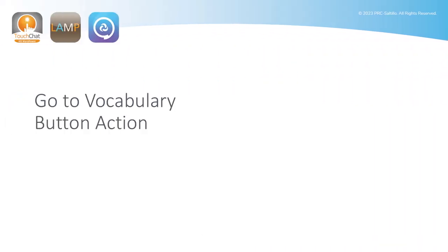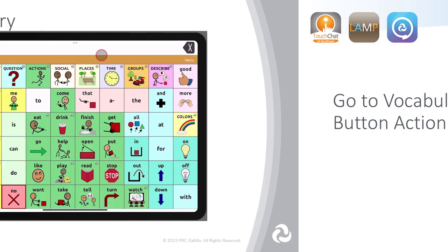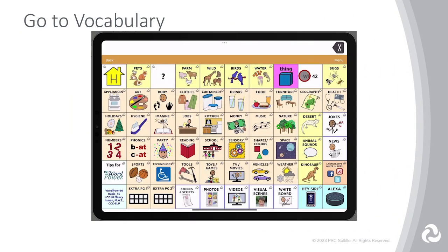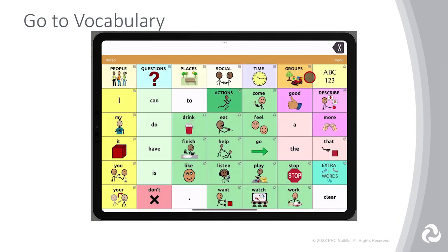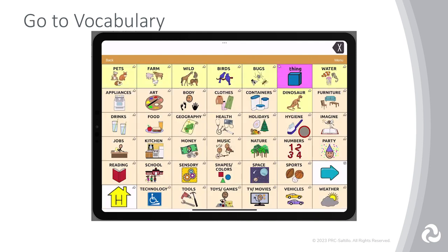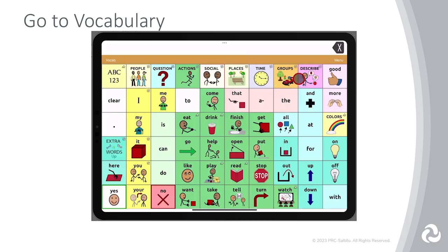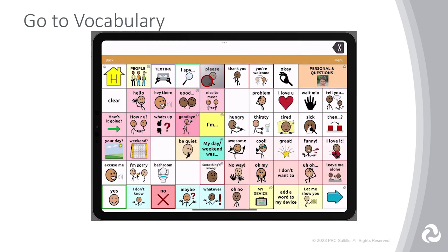A new button action has been added to all of the PRC Saltillo AAC apps in Update 2.50. The Go to Vocabulary button action allows you to program a button to take you to another vocabulary file. This can be helpful if you are going from one layout to another and want easy access to the vocabulary file without going back to the vocabulary list to choose it.